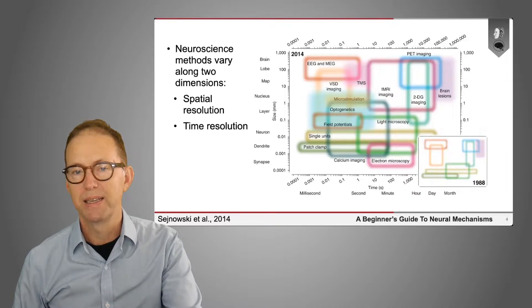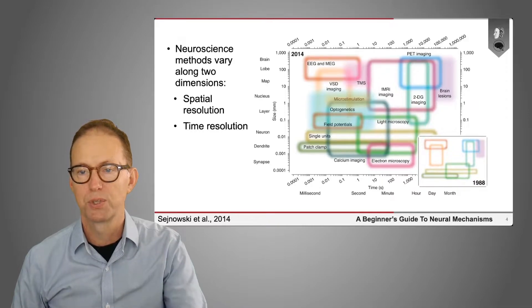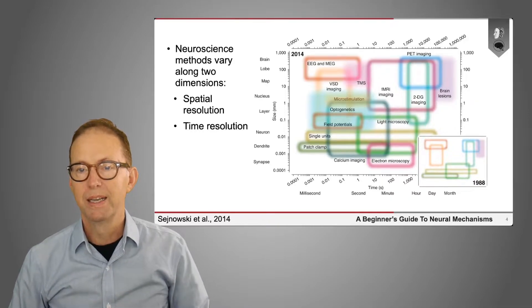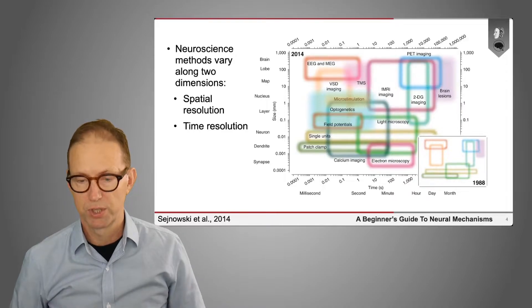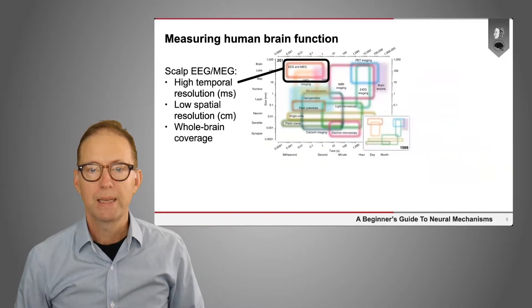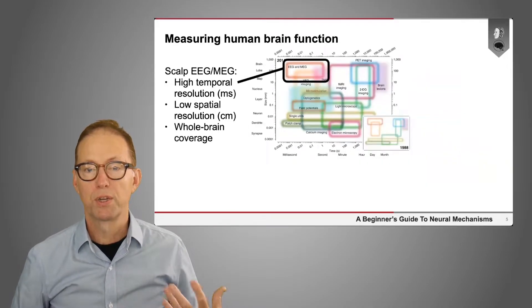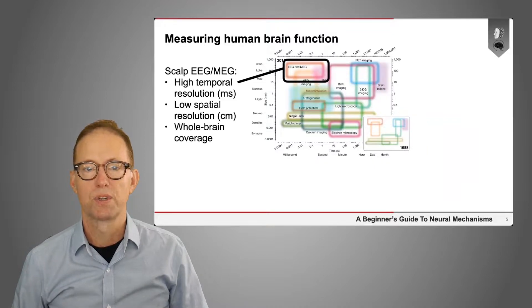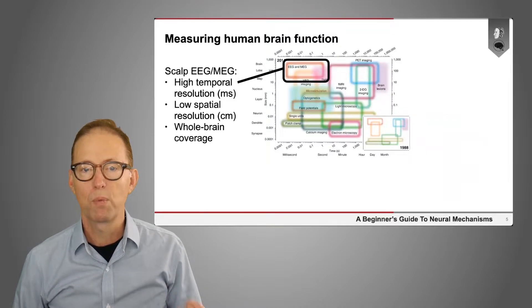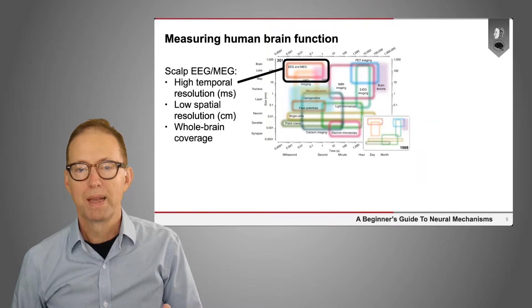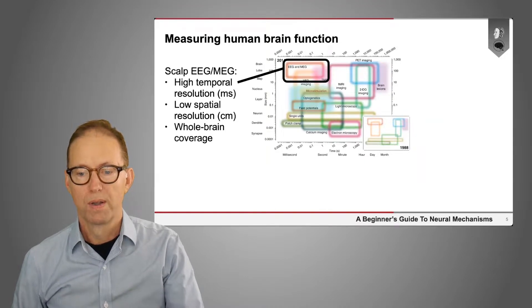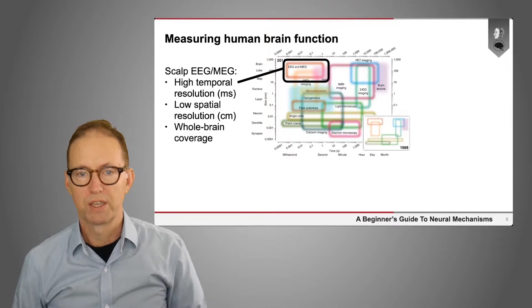You can see going from 1988 to 2014, there's been a substantial increase in the ability to measure brain function. We're going to focus on human brain function in this course. The primary ways we go about measuring human brain function are either measuring electrical activity or the downstream correlates of electrical activity in terms of blood flow.